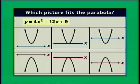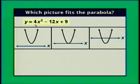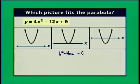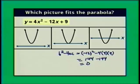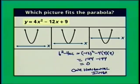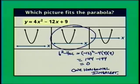How about y equals 4x squared minus 12x plus 9? The coefficient on the squared term is positive, so the parabola opens upward. The discriminant is negative 12 squared minus 4 times 4 times 9, that's 144 minus 144 equals 0. This means the parabola has only one horizontal intercept — we want an upward-opening parabola with one horizontal intercept.